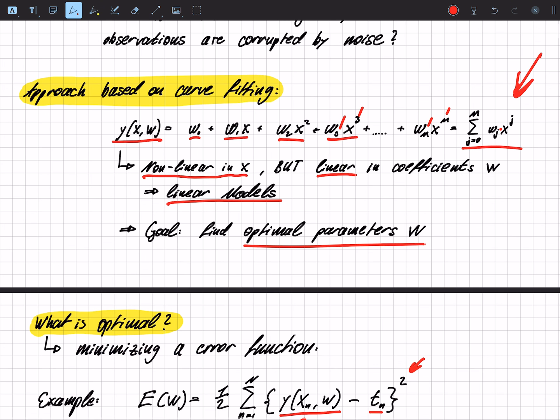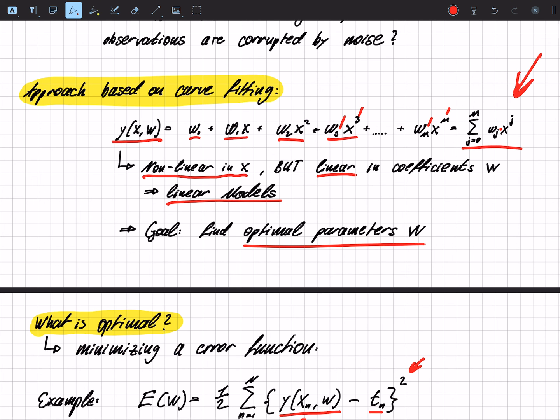To define what is as close as possible, we have an error function, where in this case we took the squared loss. So we have our polynomial minus the target, we square that, so the plus and the minus doesn't cancel out and we always have a positive sum.